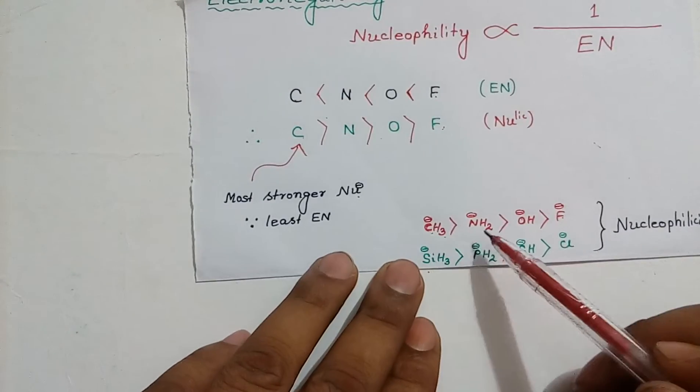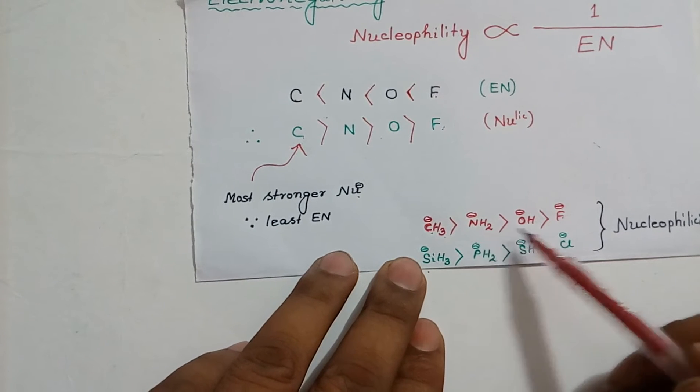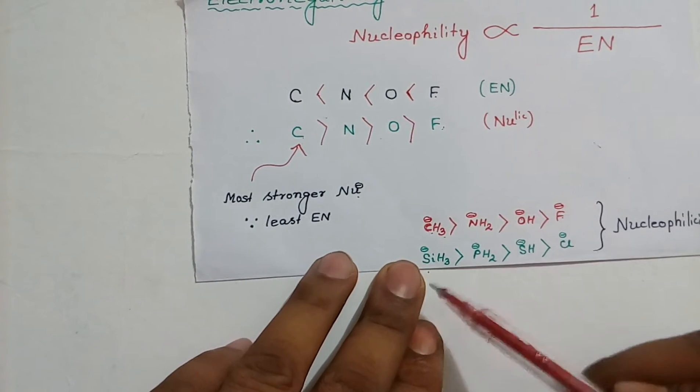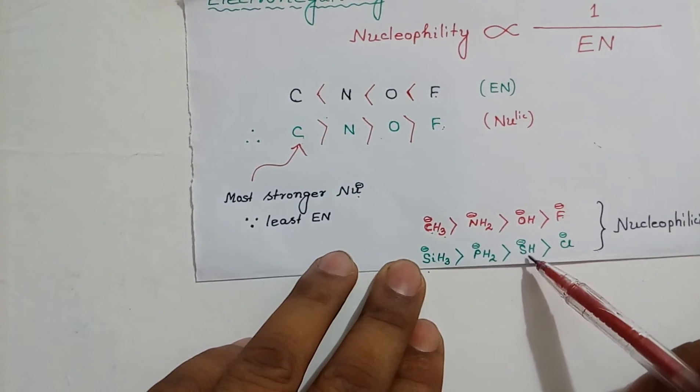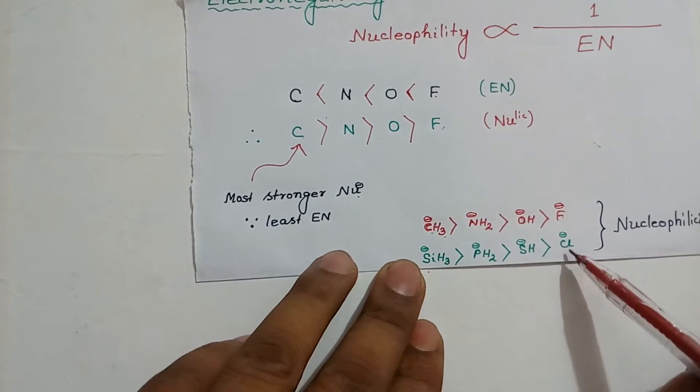Similarly, CH3- is more nucleophilic than NH2-, then OH-, then F-. SiH3- is more nucleophilic than PH2-, then SH-, then Cl-.